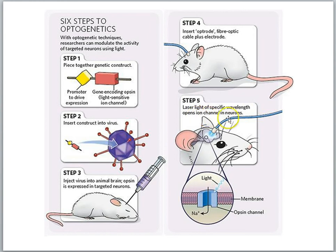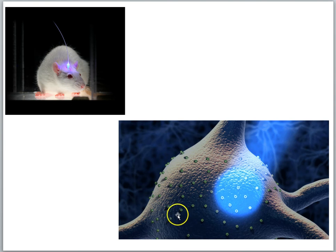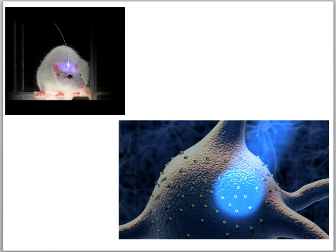Laser light of a specific wavelength opens the ion channels in neurons that have the protein inserted into the membrane. When the channel opens, ions rush in — for example, sodium rushing in will stimulate the cell. A different protein can allow negatively charged ions in, which would inhibit the cell. As shown in the animation, the light-activated channels in the cell membrane open when laser light is applied, controlling the cell's electrical activity.